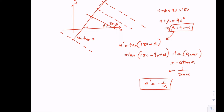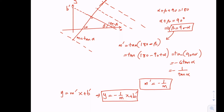For a generic perpendicular line, if it intersects the y axis at a point b prime, we can write the equation of that line as y equals m prime x plus b prime, which gives us y equals negative (1/m) x plus b prime. This is the equation of any line perpendicular to the given line. Thank you.